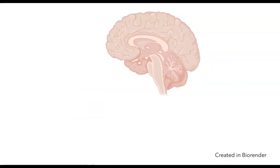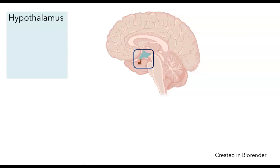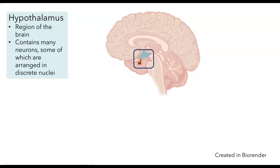The key players in this system are the hypothalamus and the pituitary, and I've outlined the region in the brain where we would find them right here. The hypothalamus is actually part of the brain itself. It's a region of the brain, and it contains many neurons, some of which are arranged in discrete nuclei. Each one of the different colors here is representing a different nucleus or region in the hypothalamus, and there are different types of neurons in these different regions which are going to be carrying out different functions.